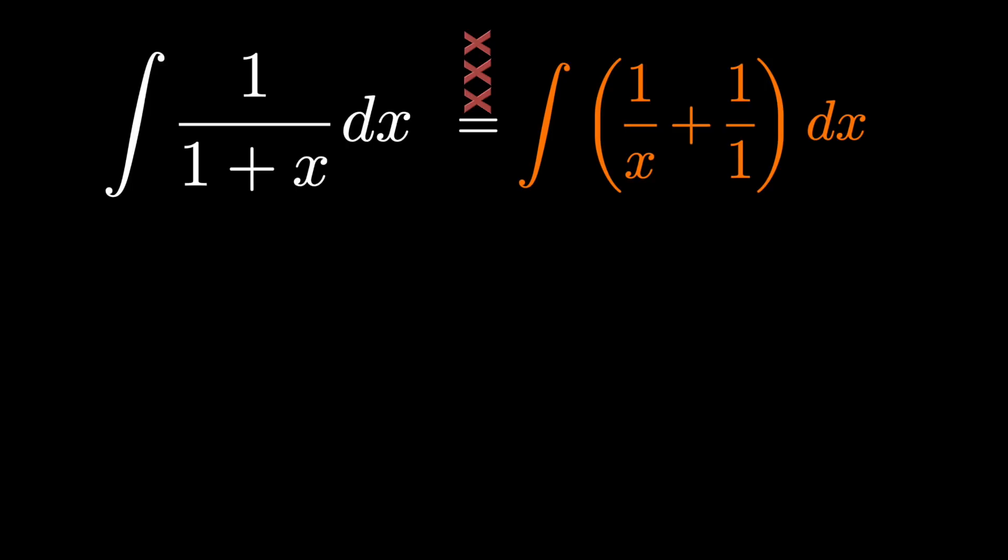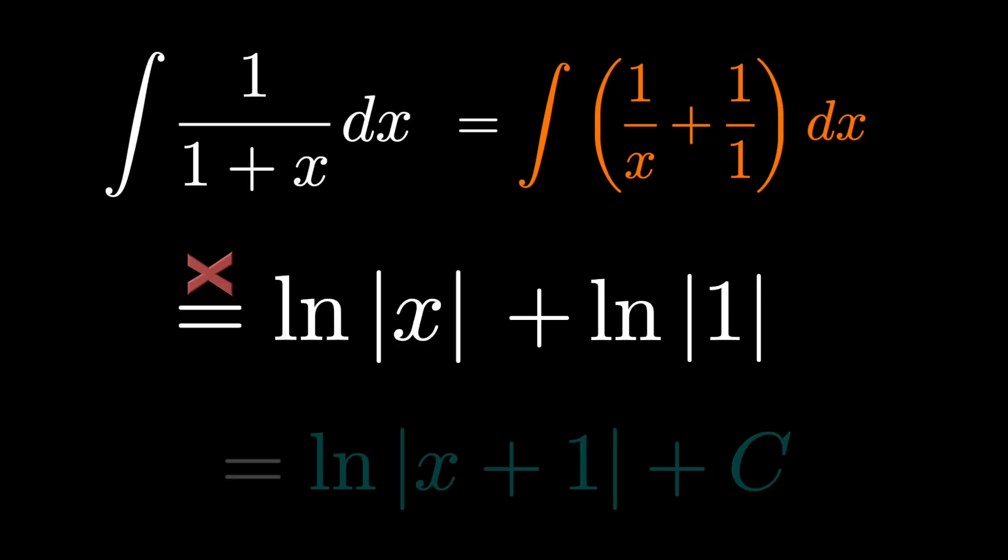We remember the antiderivative of 1 over x is natural log x. The antiderivative of 1 over 1 then should be natural log of 1. And even combining them incorrectly with properties of logarithms to log of x plus 1 does in fact give us the correct answer.